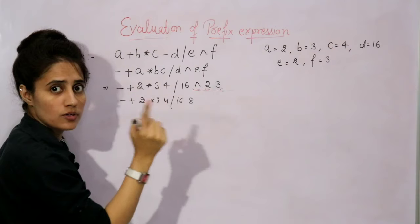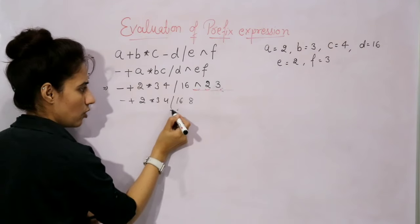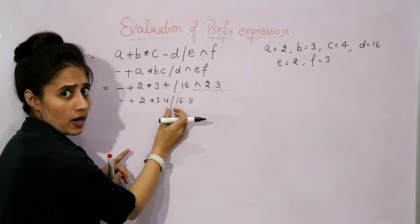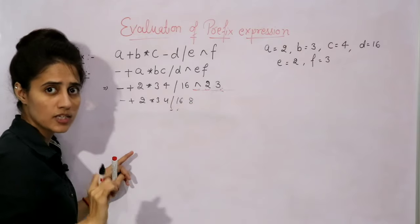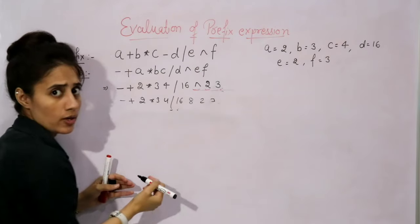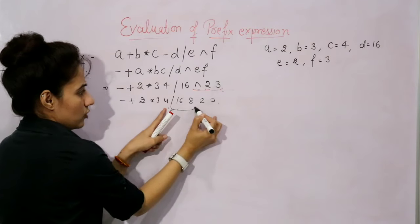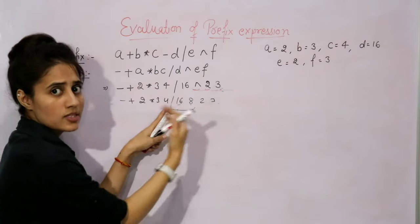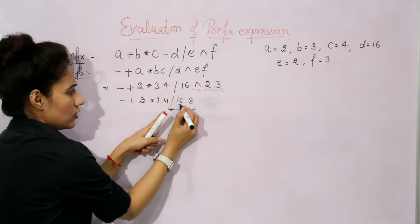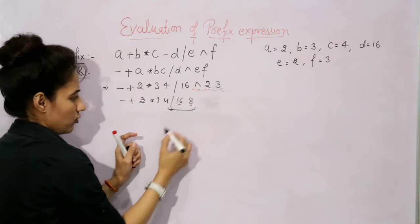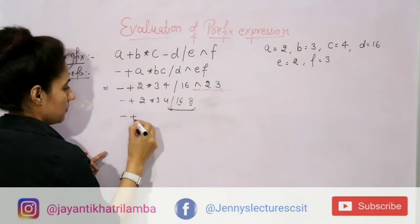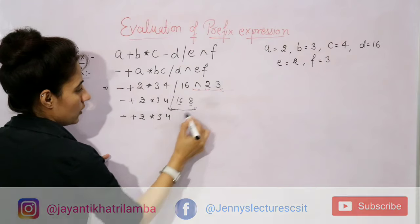Again, scan from right to left and find out the first operator, which is divide. If this prefix expression is valid, you will definitely get two operands after this operator. But you need to find only the immediate next two. For this divide operator, the operands are this one and this one — 16 and 8. So 16 divided by 8 equals 2. Now the expression becomes: 3, 4, and for this one you write down value 2.